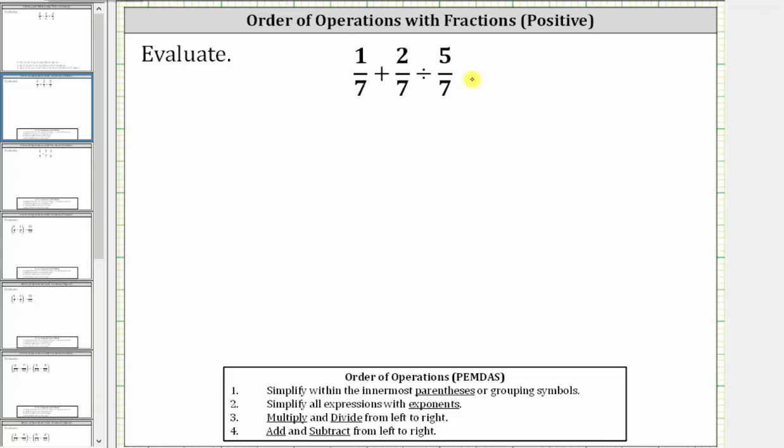We want to evaluate the given expression. Notice how we have addition and division. And since multiplication and division have priority over addition and subtraction, the first step is to determine 2 sevenths divided by 5 sevenths.